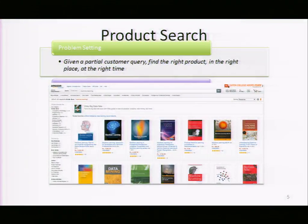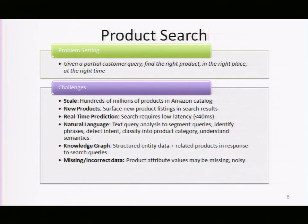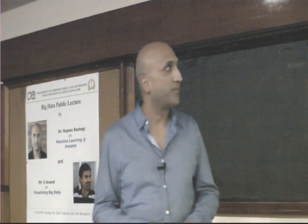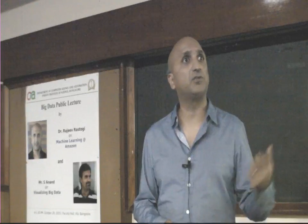Product search is very important because this is how customers actually discover products on Amazon. We have the usual challenges of scale and new products coming in, and we have to show new listings in search results as one way to drive their sales. Many of these applications are real-time: you have only about 40 milliseconds or less to compute all search results, go through thousands of candidates, and figure out the 8 or 10 products to show the user.